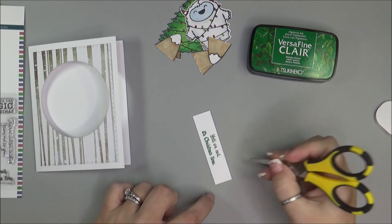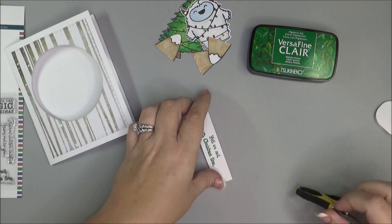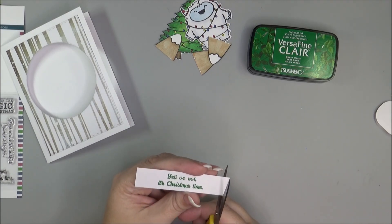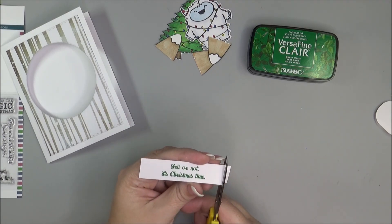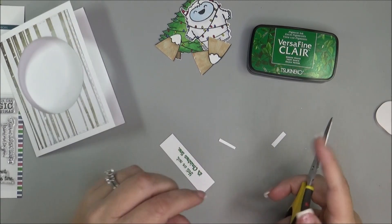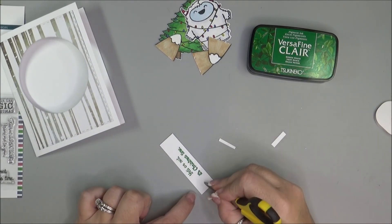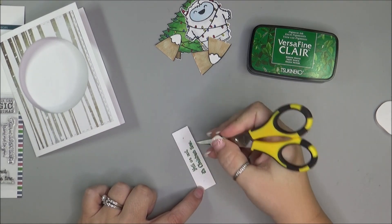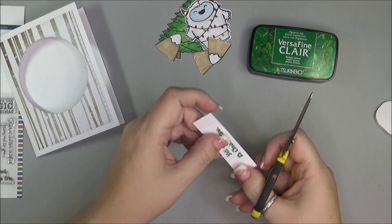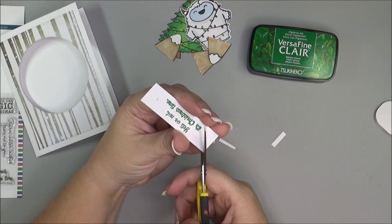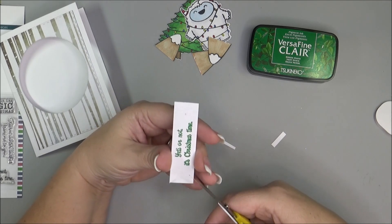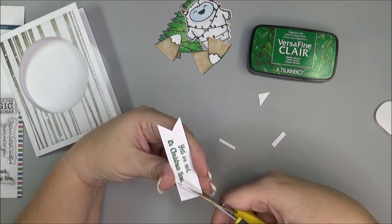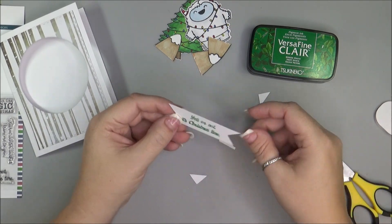And the easiest way for me to do that is actually make this a little bit shorter. And then I'm just going to take it to the center, poke a little hole on each side. And then cut from the corner down to that hole. And there is my banner.